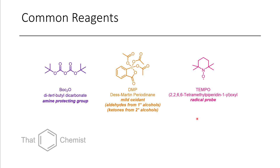Before we get into the main material, I wanted to introduce a few more reagents. The first is Boc anhydride — technically called di-tert-butyl dicarbonate. This functional group is used to protect amines. If you have amines that are reacting and you want to make them non-reactive, you can put a Boc group on, an N-Boc. This makes the molecule less polar, adding solubility in organic solvents and protecting the nitrogen.